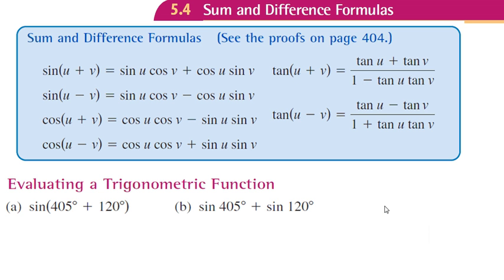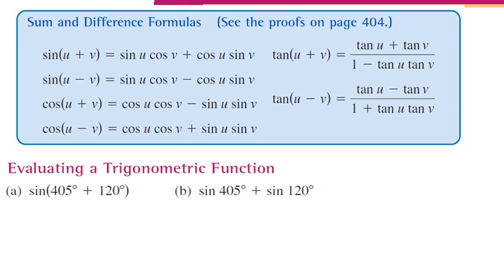Let's do example 2, which has two parts. Part A: find sin(405° + 120°). Part B: find sin(405°) + sin(120°). The purpose is to show they're not the same—we'll get two different results. One will be easier than the other.